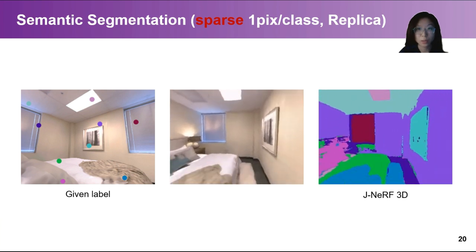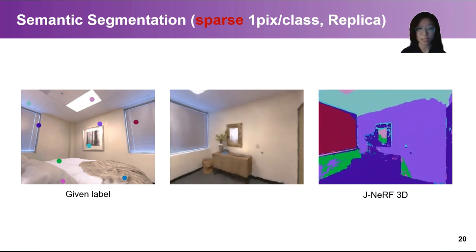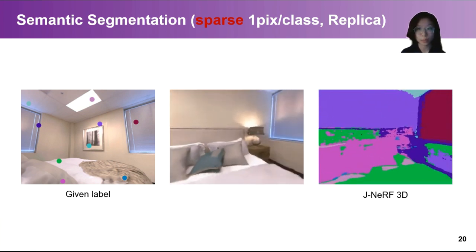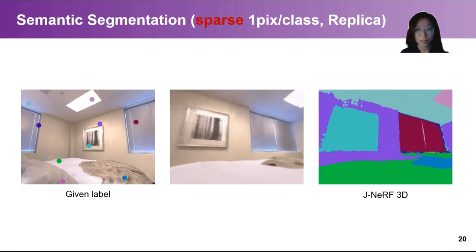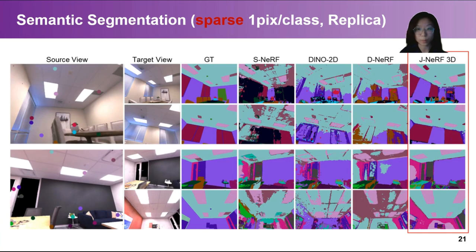Here we show the result of propagating semantic segmentation labels to the whole scene given only one pixel label for each class from one view. The test time propagation runs at approximately 25 seconds per frame. Under this sparse setting, Jacobi NERF can achieve smoother and finer propagation results compared with other baselines.